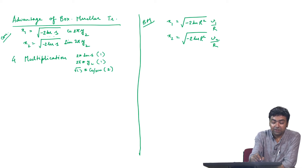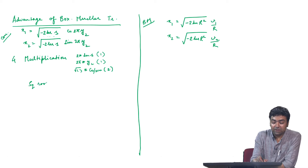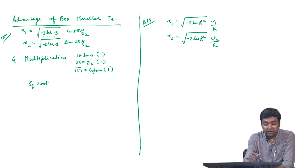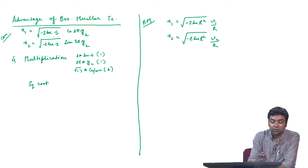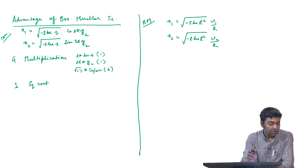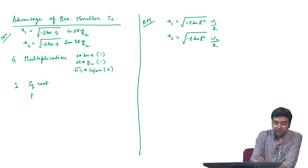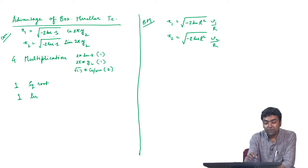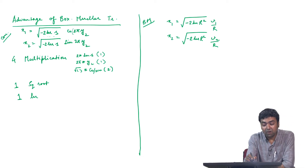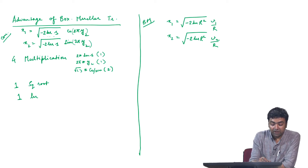Then we need one square root operation — if we evaluate that term once, we can use it for both x1 and x2. Similarly, we need one logarithmic operation, and we also need to evaluate cos(2π y2) and sin(2π y2), which means two trigonometric operations.